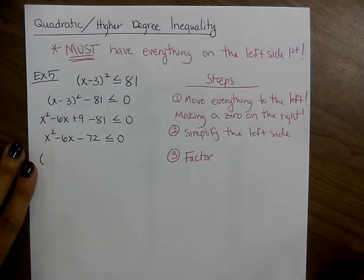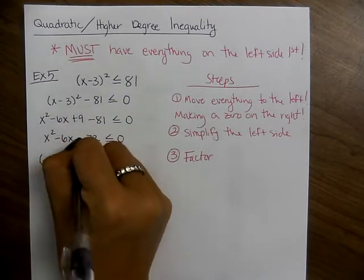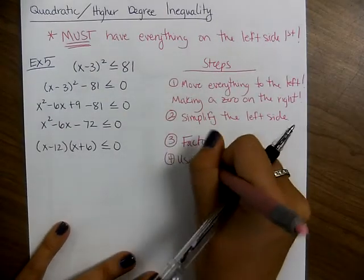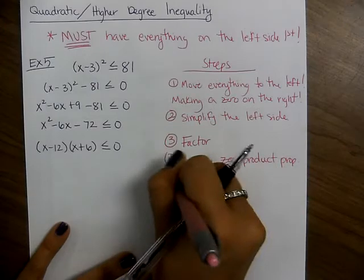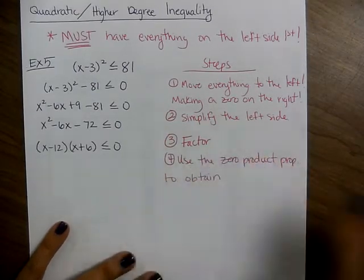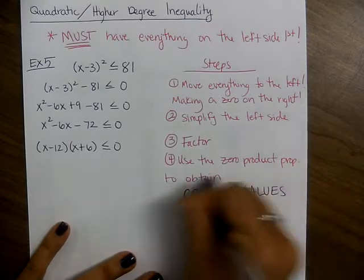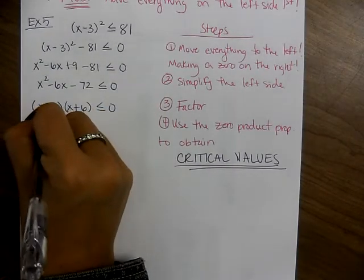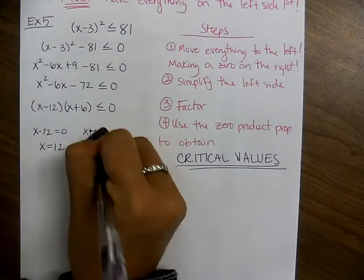Now let's try to factor. Using 12 and 6, we get x minus 12 times x plus 6 is less than or equal to 0. Step 4: use the zero product property to obtain critical values. Take x minus 12 equal to 0 and x plus 6 equal to 0, giving x equals 12 and x equals negative 6. These are not solutions — they are called critical values.